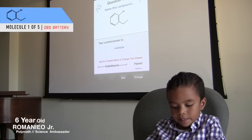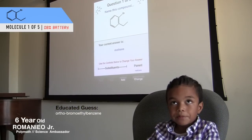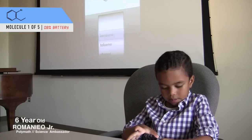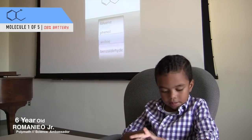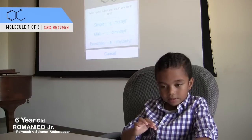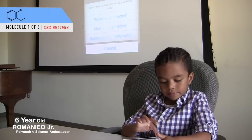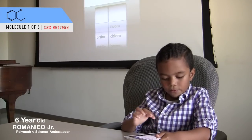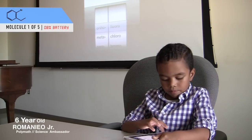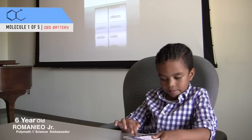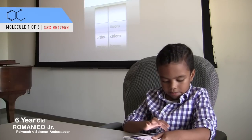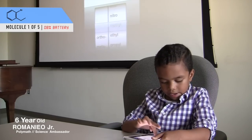This is orthobromoethylbenzene. Here's how we do it. Start with benzene, go to substituents and add. You have to go to simple for ortho-bromo. Second add — go and select ethyl.